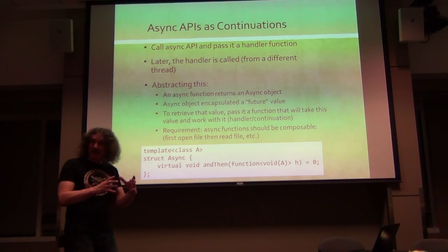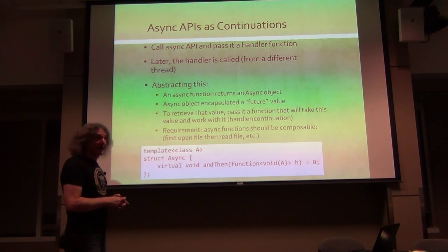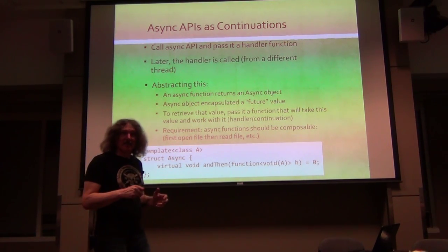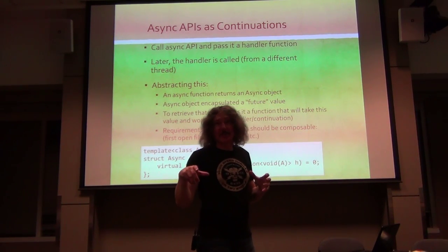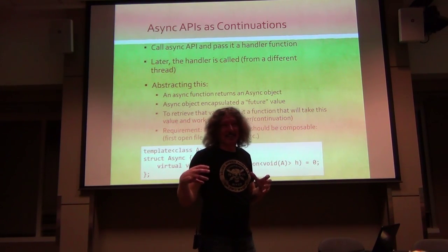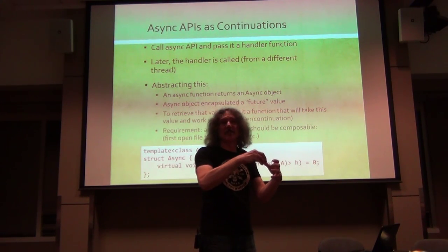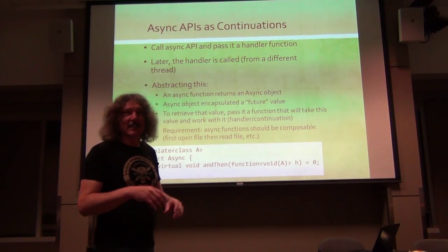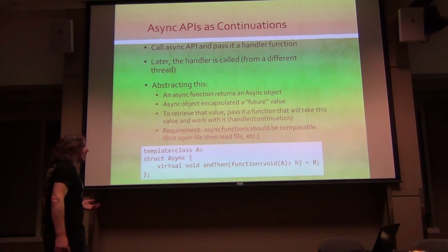If you want to retrieve this value, what you do is give it a function that retrieves the value. So this function - the continuation - is what this box will call at its leisure. You're saying: okay, now I need the value, here's the function, call this function. And the box decides when it's time, and then eventually calls your function. That's the way of retrieving the value.